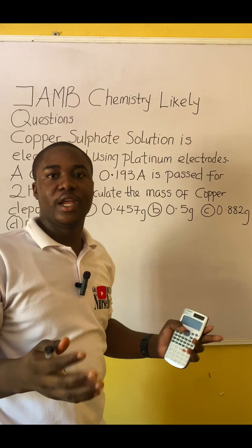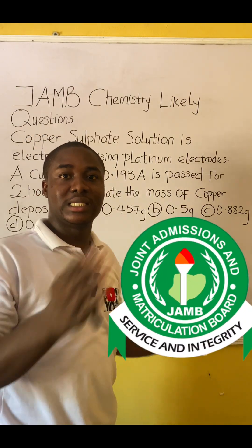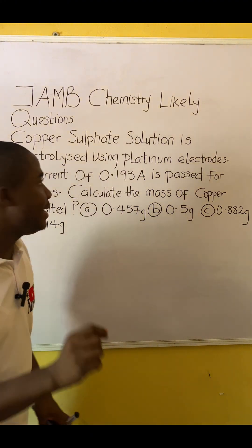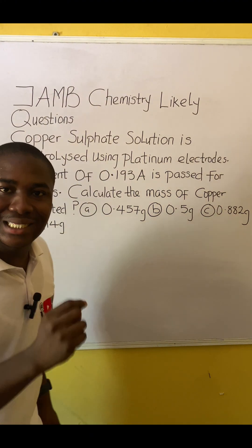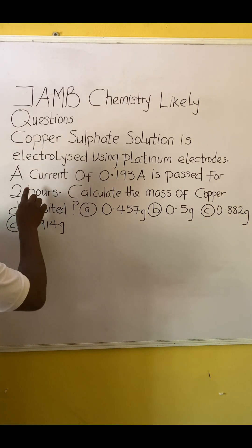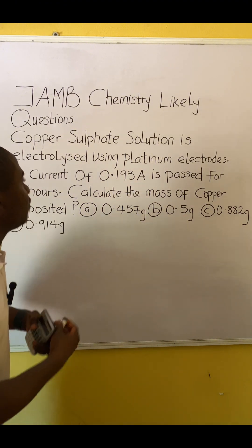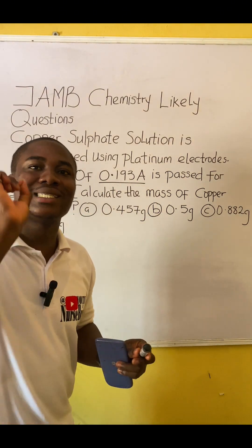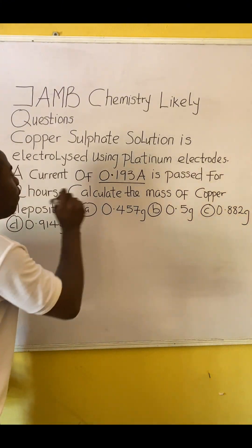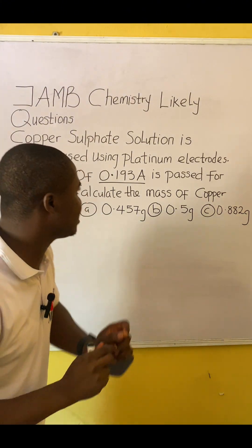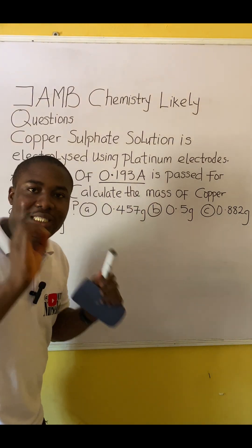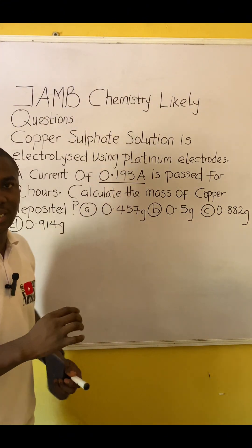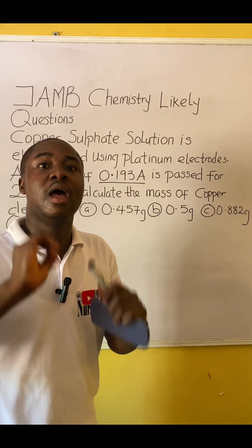You came across this question in your exam — how will you solve it? It is very easy, let's solve together. The question says copper sulfate solution is electrolyzed using platinum electrodes. A current of 0.193 amperes is passed for two hours. The question says: calculate the mass of copper deposited. This question is extremely easy.